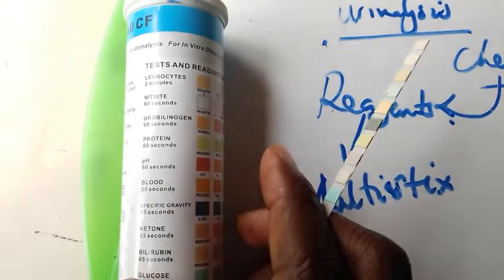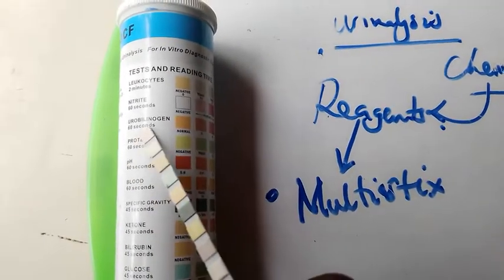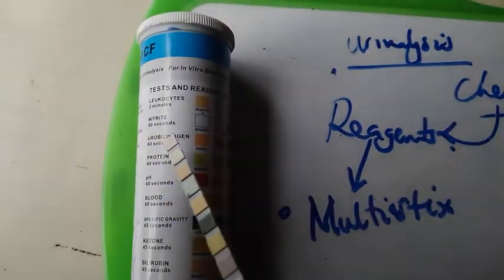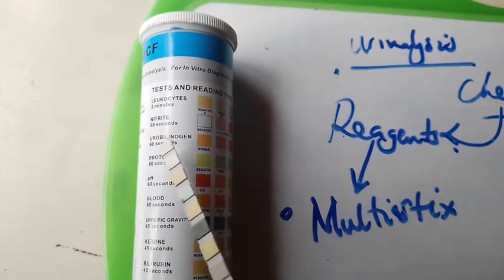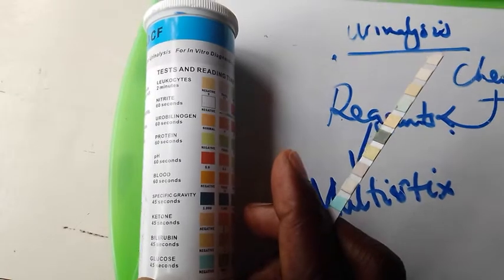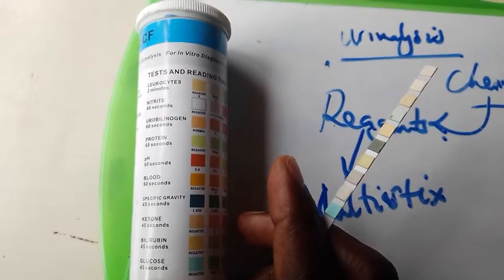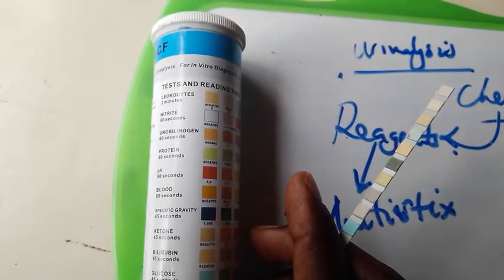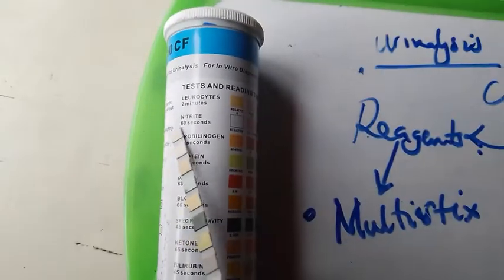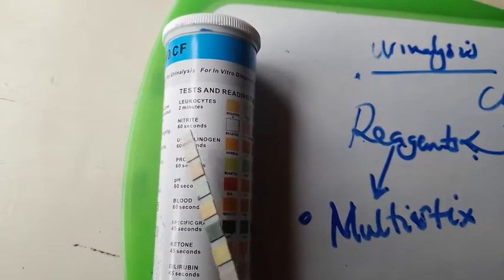If you find that there is urobilinogen, urobilinogen, so you need to pronounce this one as well, urobilinogen, you find it in urine, you may suspect that this patient has got a liver problem. It has to do with bile up there in the liver. You need to find out as well. You need to investigate what is causing this to be found in urine.